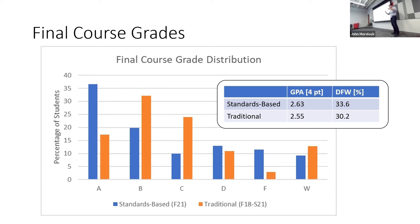Some feedback I hear is that people think I'm lessening the standard or rigor. I hesitate to do it, but I'll use the DFW rate as proof that I'm not — though I really want to lower that number without reducing rigor. A goal is to get that number as low as it can go.